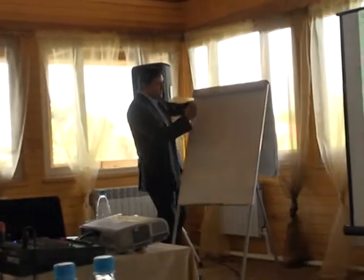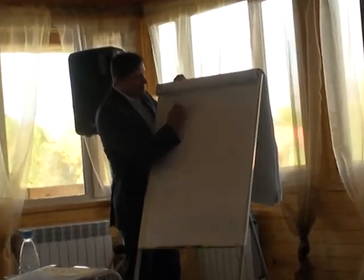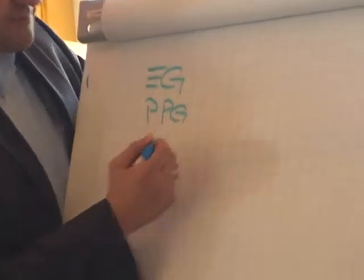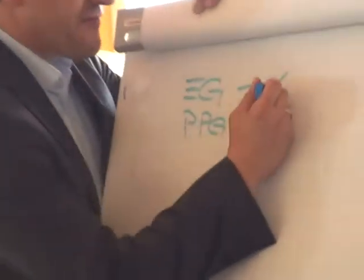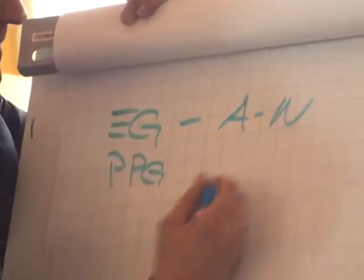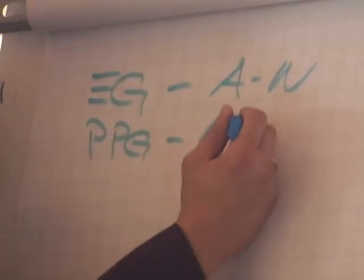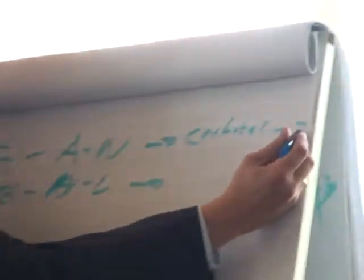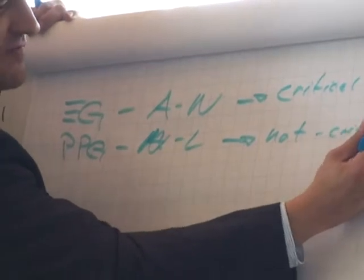Two years ago, you have ethylene glycol and you have propylene glycol. This is antifrogene N, and this is antifrogene O, L. So this was critical to environment, and this was not critical to environment.